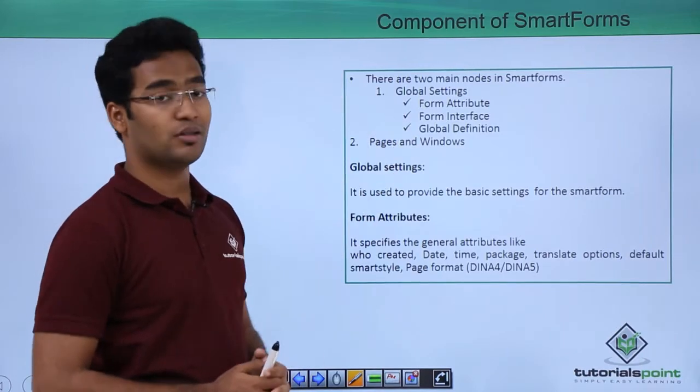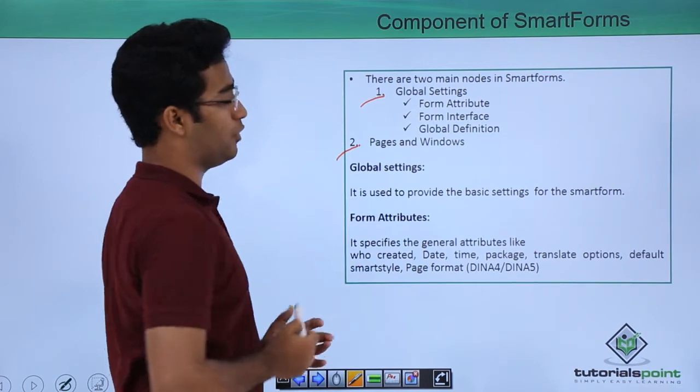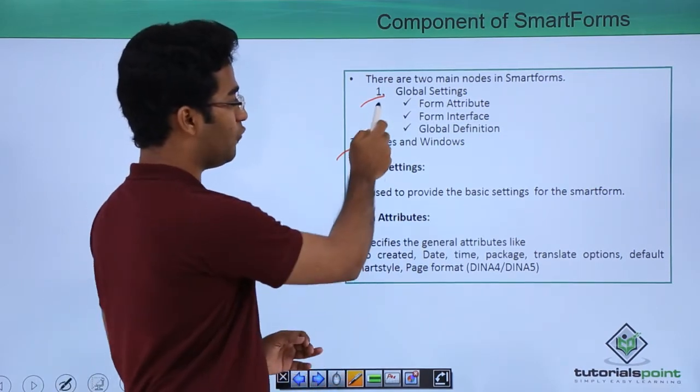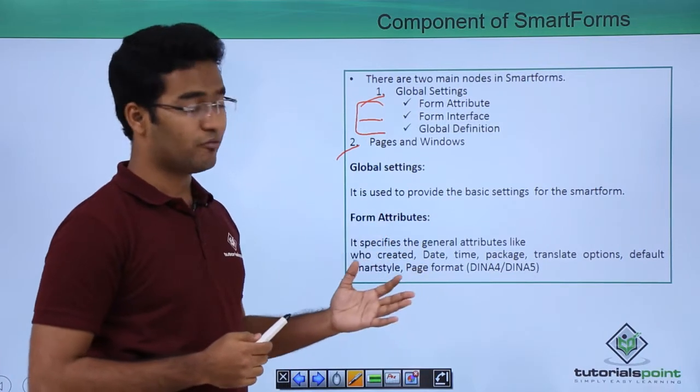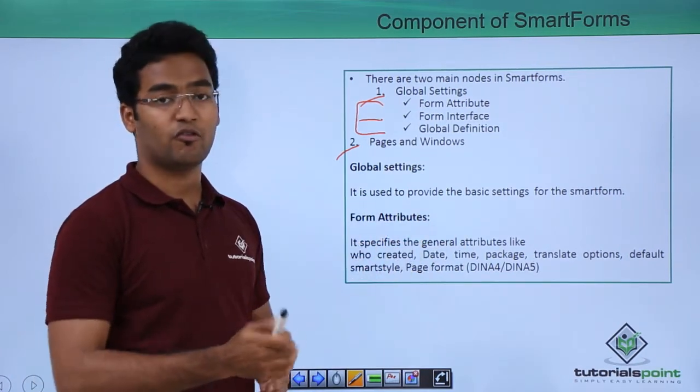There are two main nodes in the Smart Forms: Global Settings and Pages and Windows. In the Global Settings, there is Form Attribute and Form Interface. Global Settings is where we provide our basic settings for our Smart Forms.